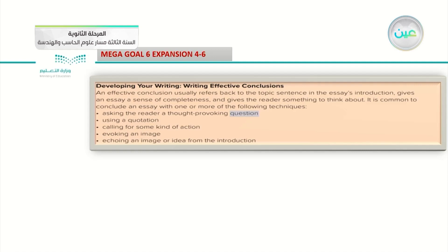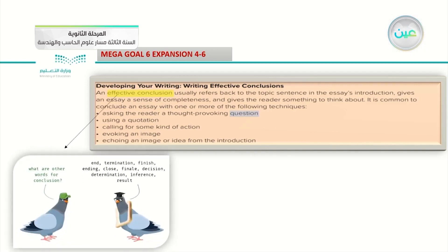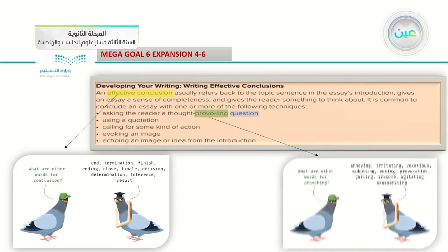It is common to conclude an essay with one or more of the following techniques, which help you make an effective conclusion that is easy and clear for your reader. Number one: asking the reader a thought-provoking question. What do they mean by provoking a question? Provoking means annoying, irritating, vexing, maddening — there are a lot of synonyms that correspond to provoking a question.